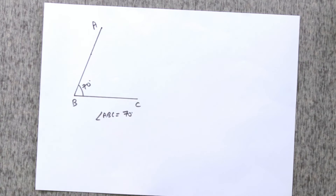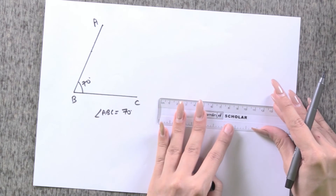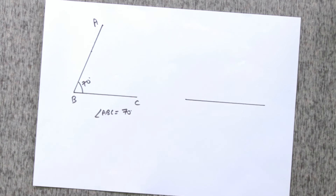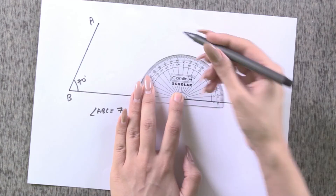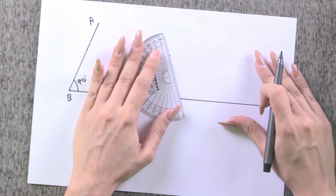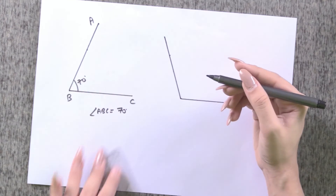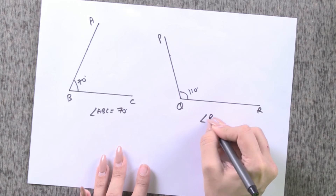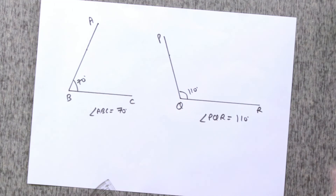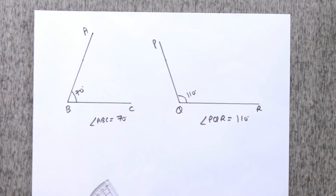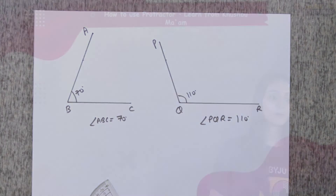Now let's draw another angle — this time an obtuse angle. Let's make a line, then place the protractor the same way. This time we want to draw 110 degrees. Put a point at 110 degrees and join it to the endpoint. This gives us 110 degrees. Mark it as angle PQR = 110°. That's an obtuse angle. So that's how we can draw both acute and obtuse angles using a protractor.